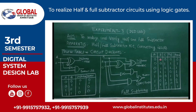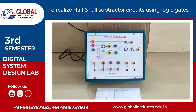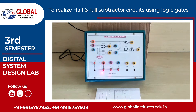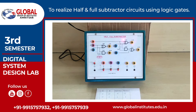Now we will verify the truth table of the half subtractor and full subtractor using the trainer. The kit has three switches for connecting the inputs: A, B, and C. When a switch is at zero position, the input is zero; when at one level, the input is one. There are also two LEDs that show the output level. If the LED does not glow, the output is zero; if it glows, the output is one.